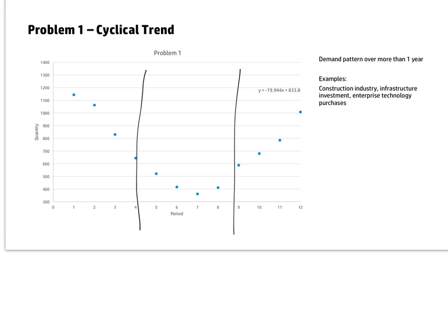Things that might exhibit this demand pattern are the construction industry or infrastructure investment — things that take a long time to get funding in place or to complete. Likewise with enterprise technology: new technologies get put in place, businesses start buying them, and then after a while those drop off because all the businesses have completed that cycle, and then they need to invest again in a new set of technology, either hardware or software or both.